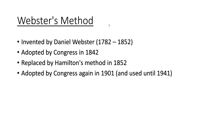In this video we're going to be talking about Webster's method, which is another divisor method of apportionment. Some history: it was invented by Daniel Webster, it was adopted by Congress in 1842, it replaced Hamilton's method in 1852, and it was adopted by Congress again in 1901 and was used until 1941.